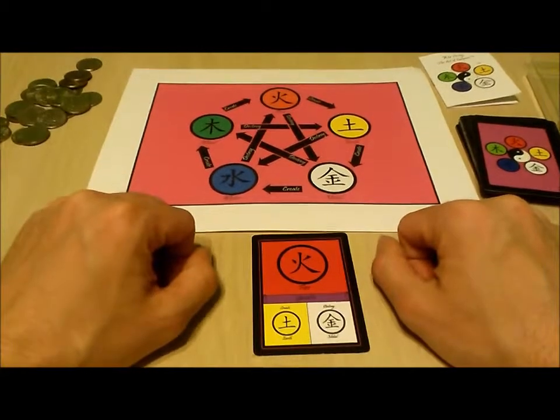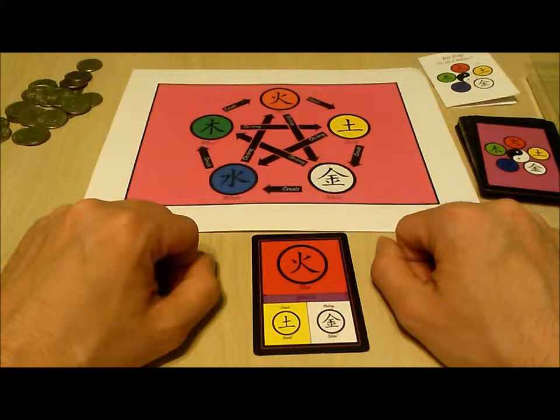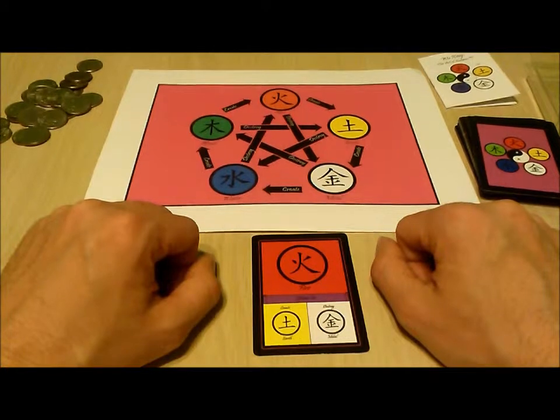However, a play cannot be made that would remove a token that is not present. So you cannot play a fire card to remove a fire token and a metal token if a fire token and a metal token are not present.